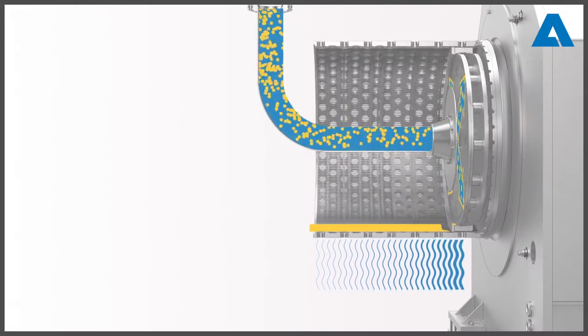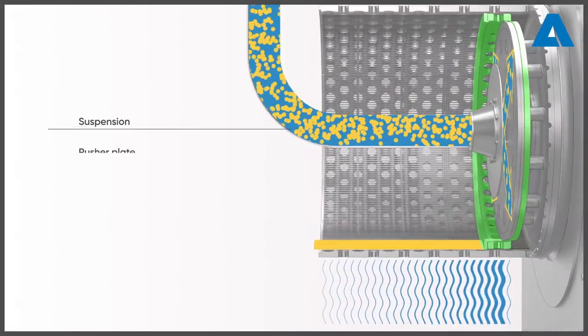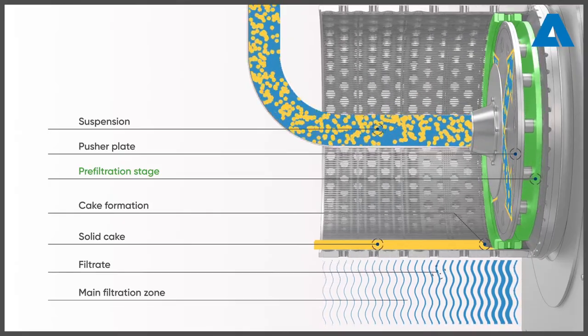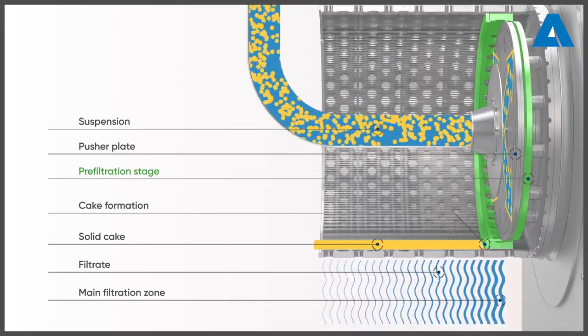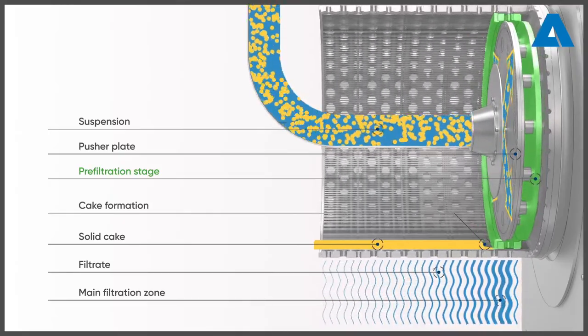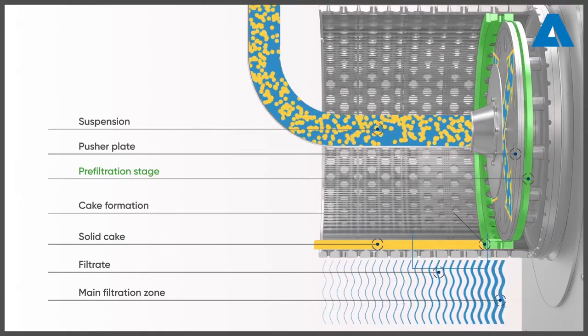What makes the Krauss-Mafi pusher centrifuge with pre-filtration technology different? First of all, the pusher plate is stationary. It is our pre-filtration stage that moves instead.